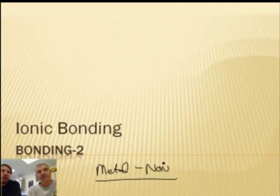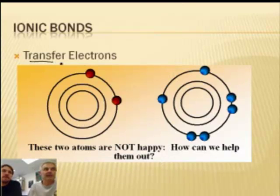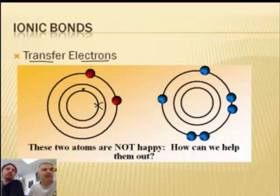So let's dive in and get some more details. The key thing, which we touched on briefly in the last podcast, is there's a transfer of electrons. They want to fulfill the octet rule. Here I have an element with some internal electrons, and this element has two valence electrons.